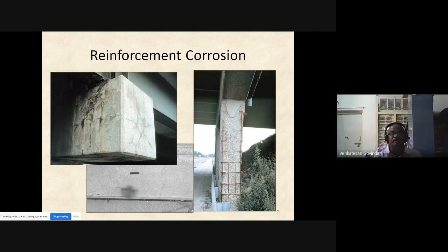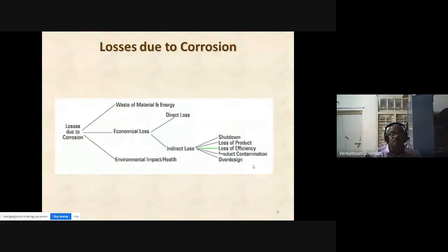Losses due to corrosion include waste of material and energy, economic losses, both direct and indirect. Sometimes infrastructure collapses, process shutdowns occur, loss of products, loss of efficiency, product contamination, and over-design.